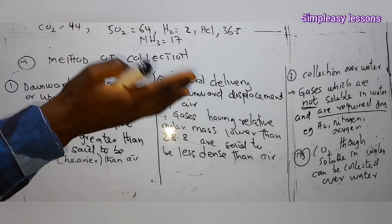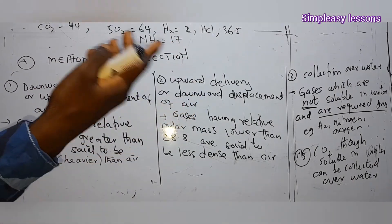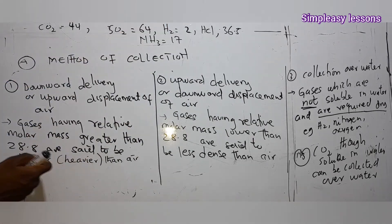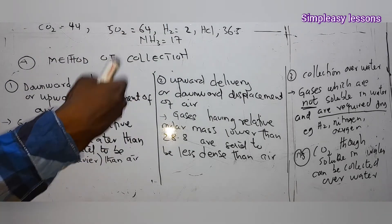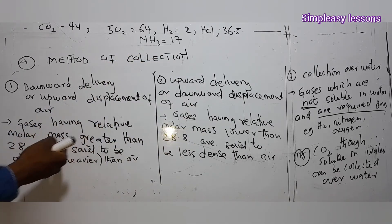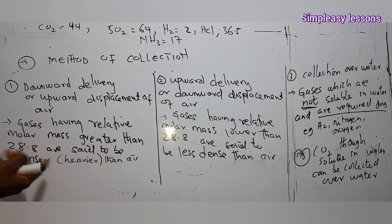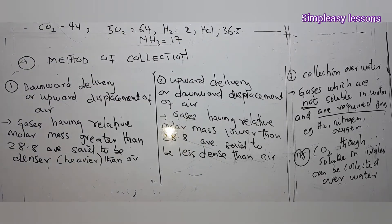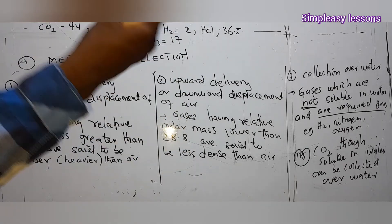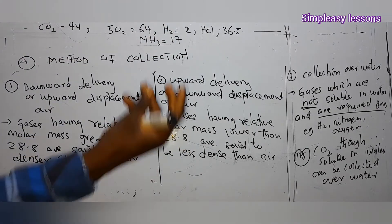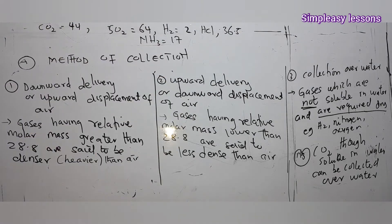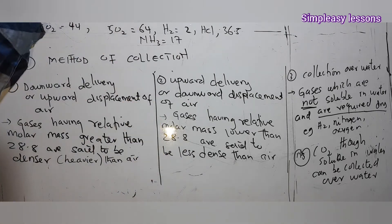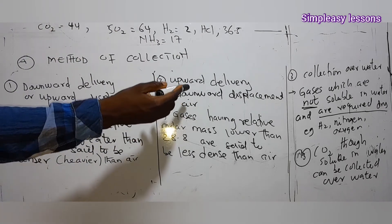If the gas is heavier than air, it sinks — it will not float. For downward delivery, the gas must have a relative molar mass greater than 28.8, meaning it is denser or heavier than air. Because the gas moves down, air moves in the opposite direction — upward. So downward delivery corresponds to upward displacement of air.